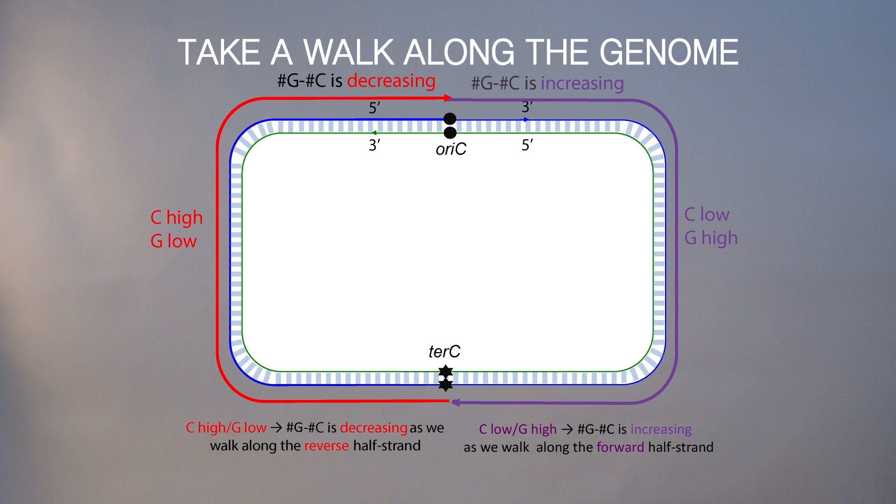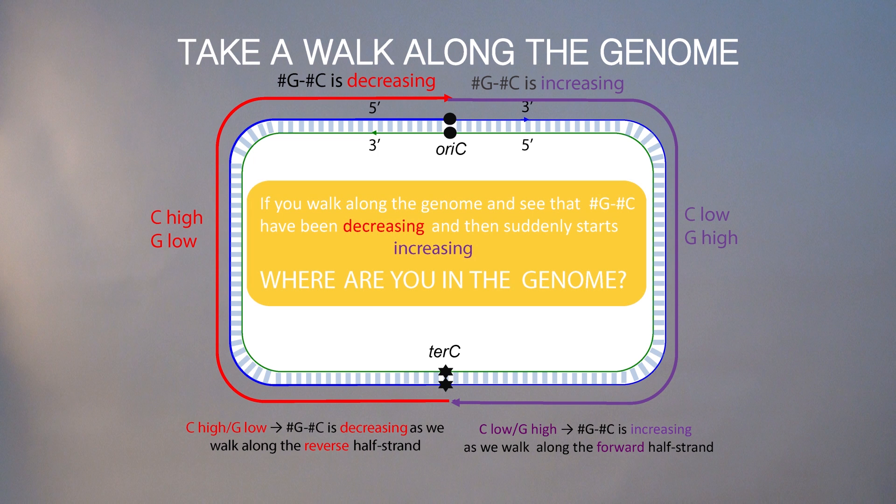Again, this sounds like a peculiar and not very important thing. Why do we care? I ask one more question. If you walk along the genome and you count the number of G minus the number of C that you saw, and you have seen that the number of G minus number of C have been decreasing and then suddenly start increasing, imagine you walk through the genome, you count the difference G minus C and it has been decreasing and then suddenly starts increasing. My question is, where in the genome are you?